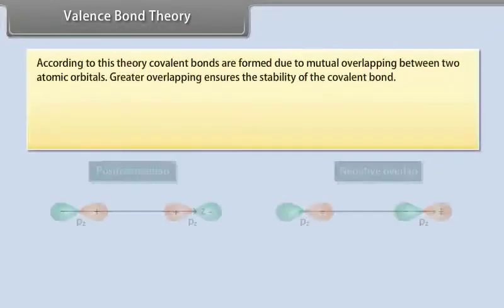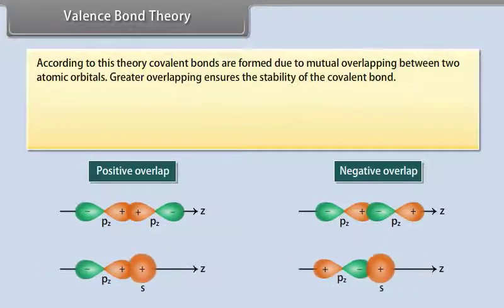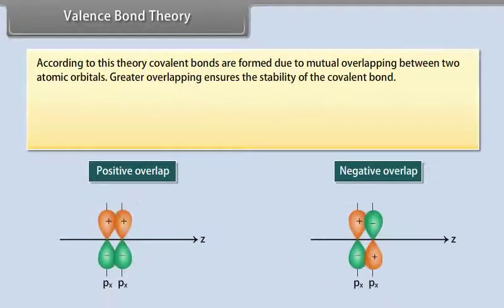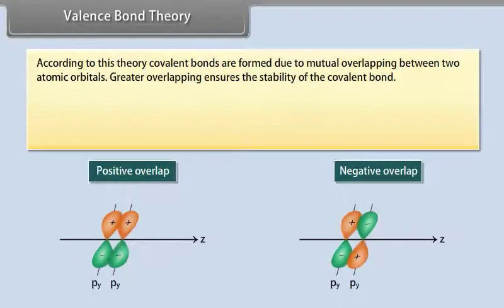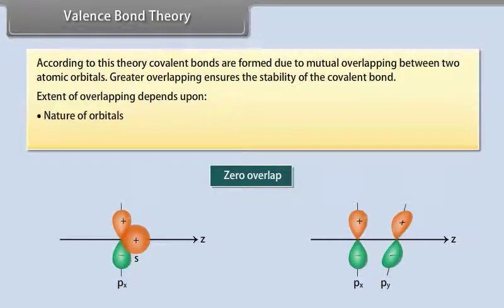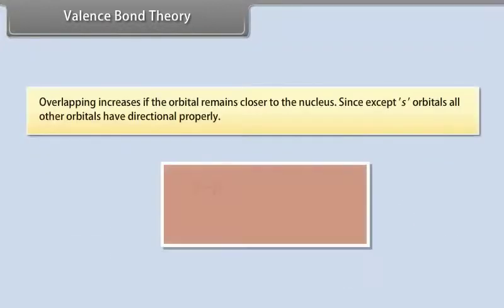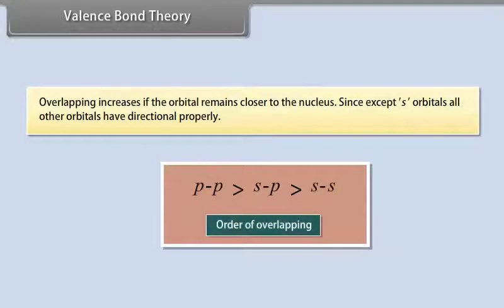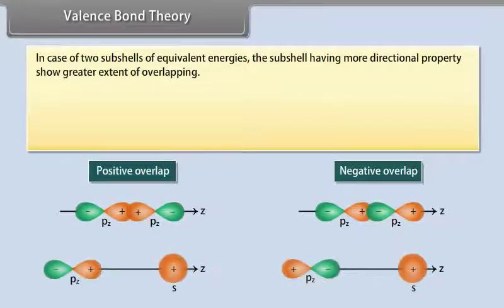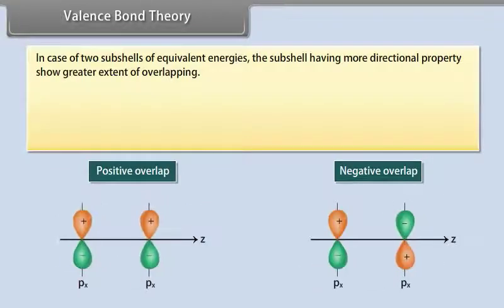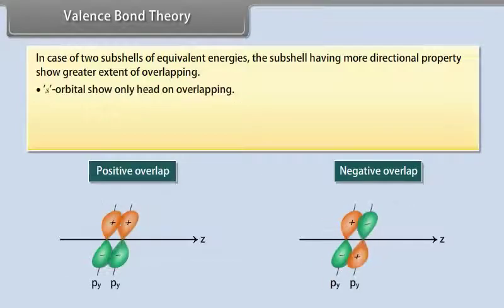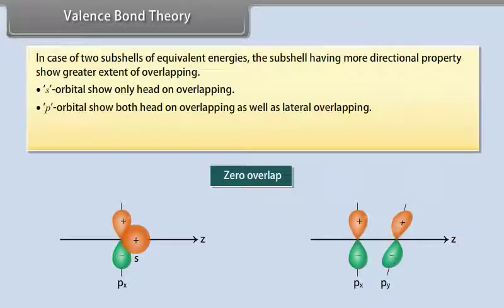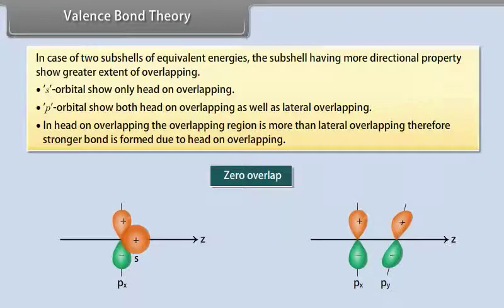According to Valence Bond Theory, covalent bonds are formed due to mutual overlapping between two atomic orbitals. Greater overlapping ensures the stability of the covalent bond. The extent of overlapping depends upon the nature of the orbitals and the nature of the overlapping. Overlapping increases if the orbital remains closer to the nucleus. Except for S orbitals, all other orbitals have directional property. S orbitals show only head-on overlapping, while P orbitals show both head-on and lateral overlapping. Head-on overlapping produces a stronger bond because the overlapping region is greater than in lateral overlapping.